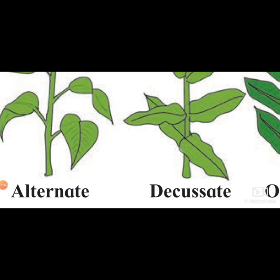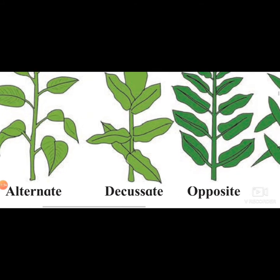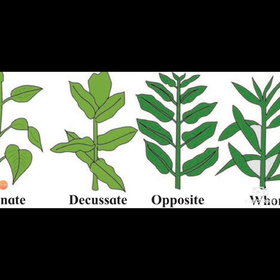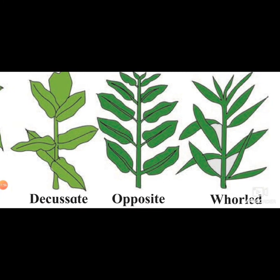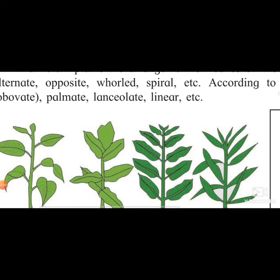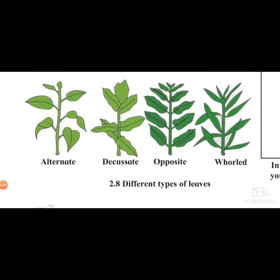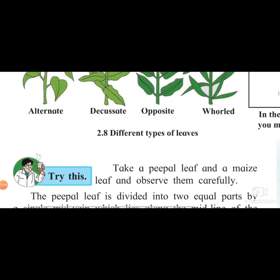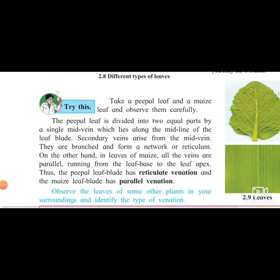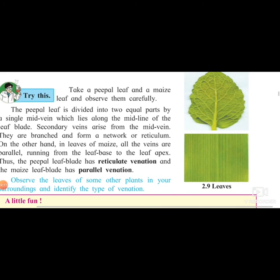Decussate means the leaves are arranged spirally, completely covering the stem - one leaf is here, the next is beside it, and they go on completing a circle. Opposite means one leaf is on one side and the other leaf is at an equal distance in the opposite direction. Whorled means leaves are completely covering the stem at a node. These are the different types of leaf arrangement on the stem.